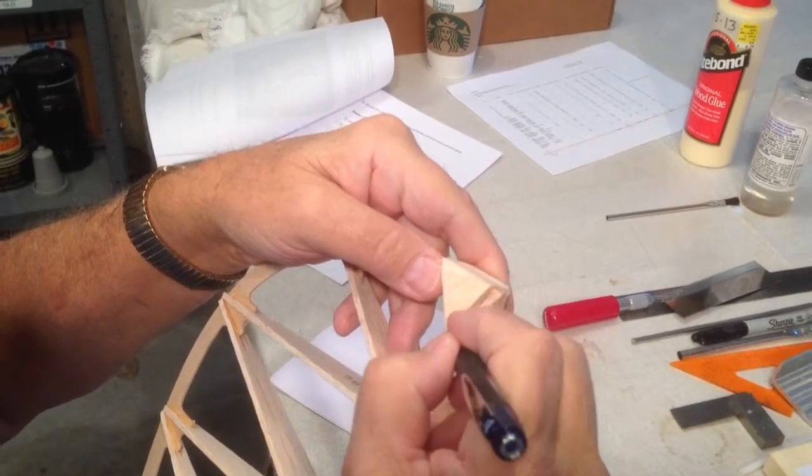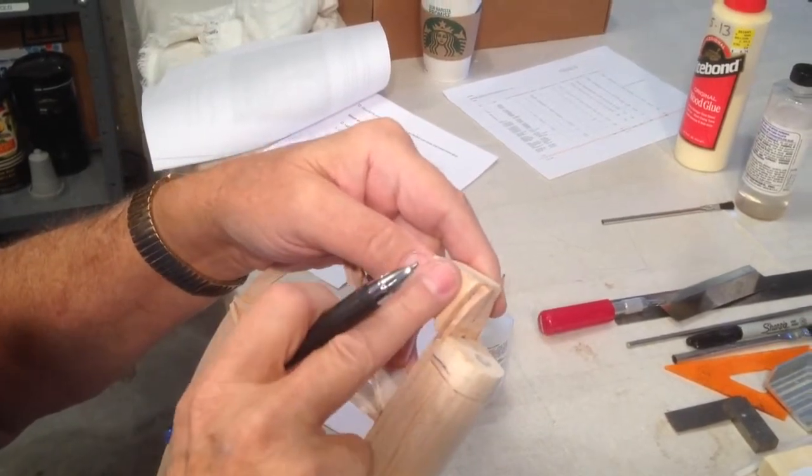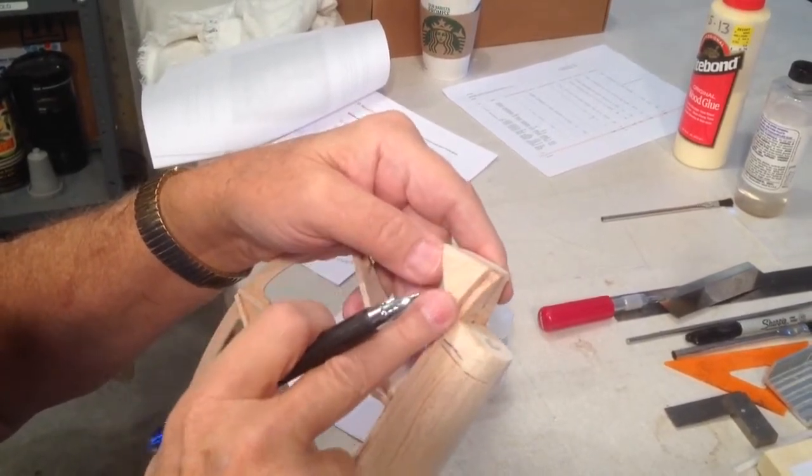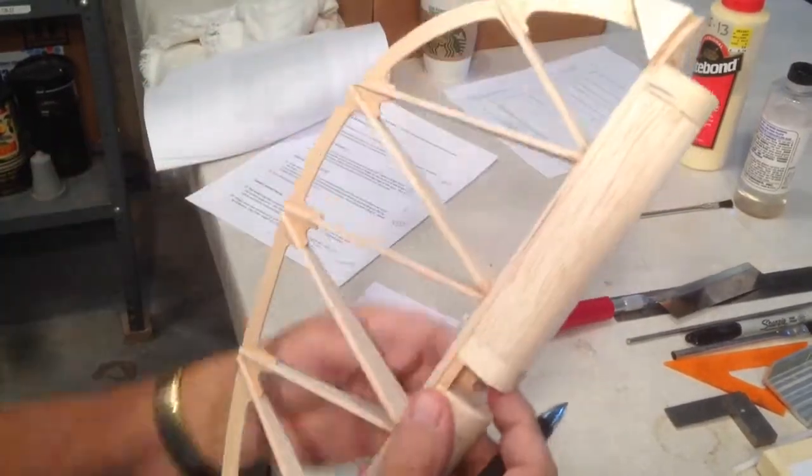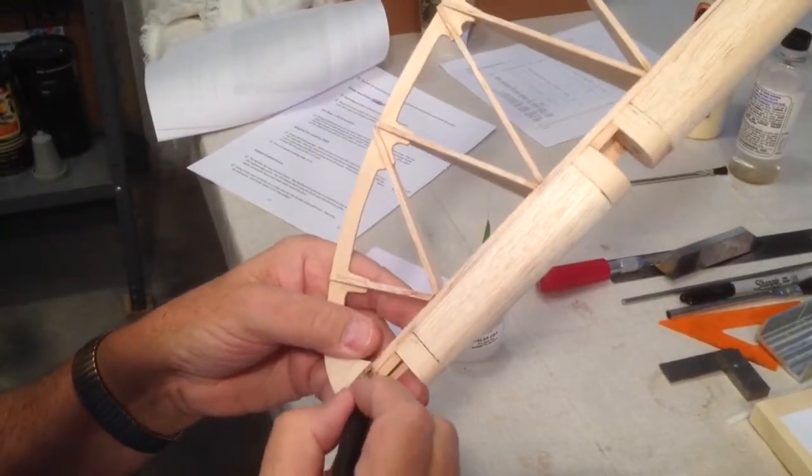...just make a little mark there so you know not to go... You want to leave the line or let the line get very faint, and then you know you're there.